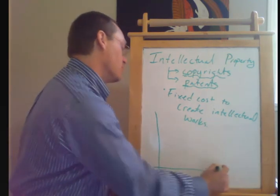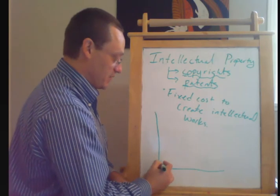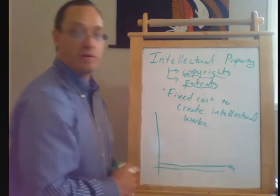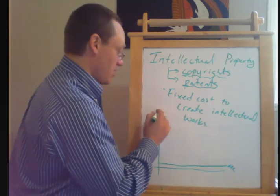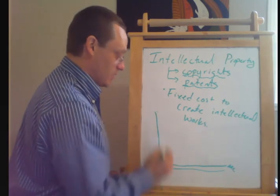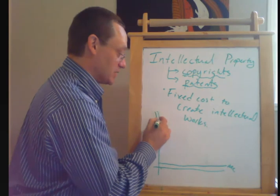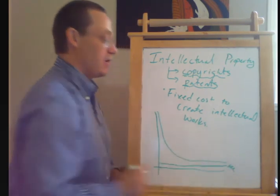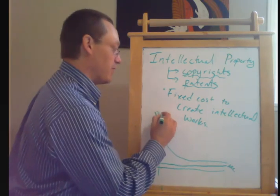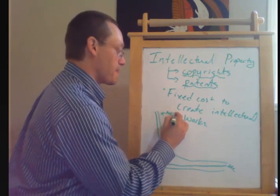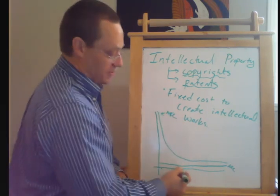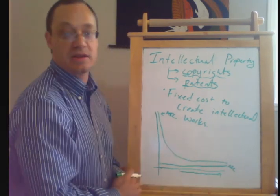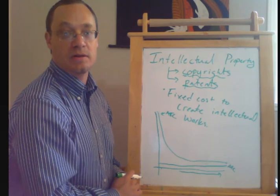If this is true, what's going to happen is if we have this low, constant marginal cost per unit, if we produce just one unit, we're going to have huge average costs because we're trying to spread those fixed costs over very few units. But as we produce more and more units, we're going to see that the average total cost is going to converge down to the marginal cost.